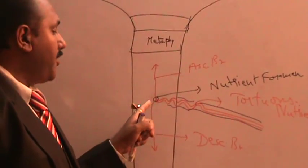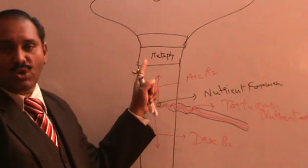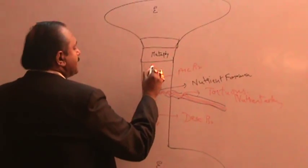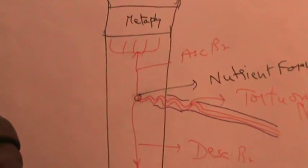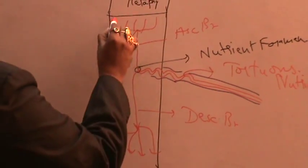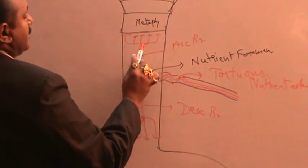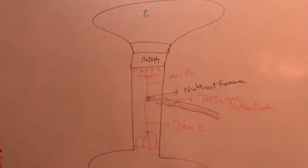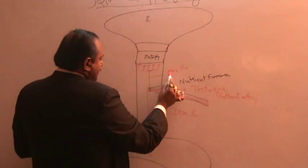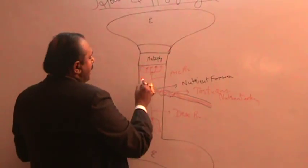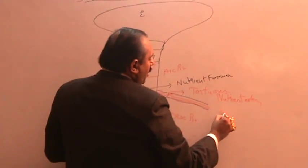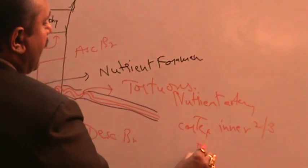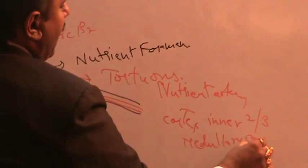So you have a single large nutrient artery that becomes tortuous at the site of entry via the nutrient foramen. It enters the shaft and gives an ascending branch and a descending branch. Both branches give lots of parallel branches, and these branches anastomose with the epiphyseal blood vessels and supply the cortex.